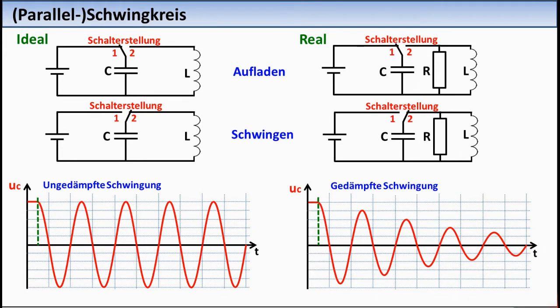The parallel or series connection of a capacitor with a coil is called a resonant circuit. The ideal resonant circuit is characterized by the fact that it has no losses, that is, no ohmic or resistive resistance that converts part of the electrical energy into heat.